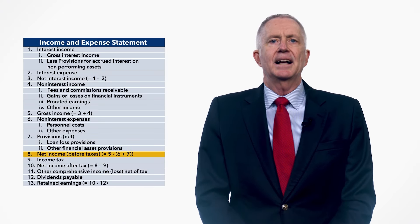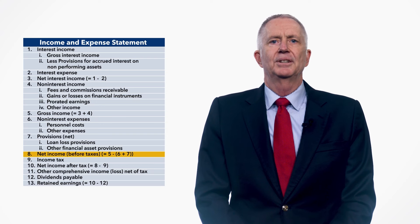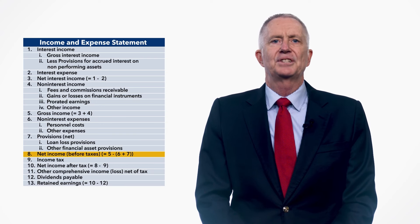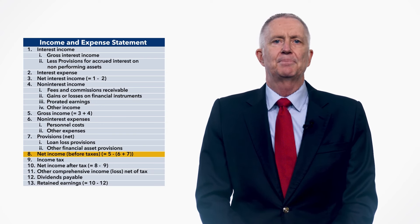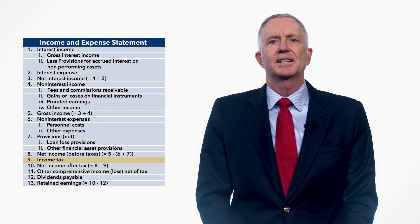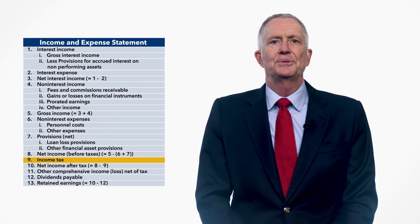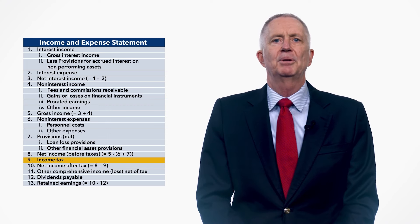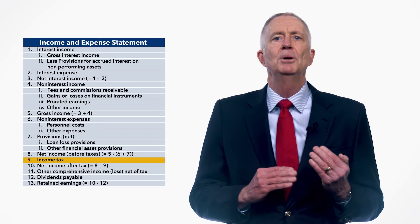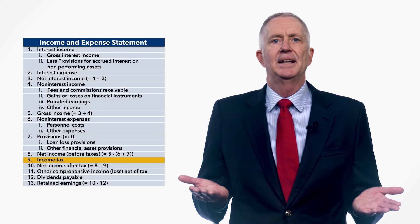Net income before tax, line 8, is gross income less non-interest expense and net provisions expense. Income tax, line 9, includes those taxes that accrue in the accounting period which are related to income, profits, and capital gains. Other taxes, such as sales taxes and value-added tax, are recorded in other expenses. Payroll taxes, such as social benefits contributions, are recorded as personnel expenses.